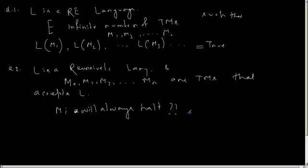Student: Does it mean that the behavior of L changes from one Turing machine to another? Instructor: The behavior of L will not change; the behavior of the machine will change. Suppose M0 accepts L and rejects any words that do not belong to L. But M1 may accept L but go into an infinite loop for some words not belonging to L and may reject some words that belong to L. Similarly, M2 may accept L but go into an infinite loop for all other words not belonging to L. But still L is recursive, because there exists a Turing machine M0 that always halts.